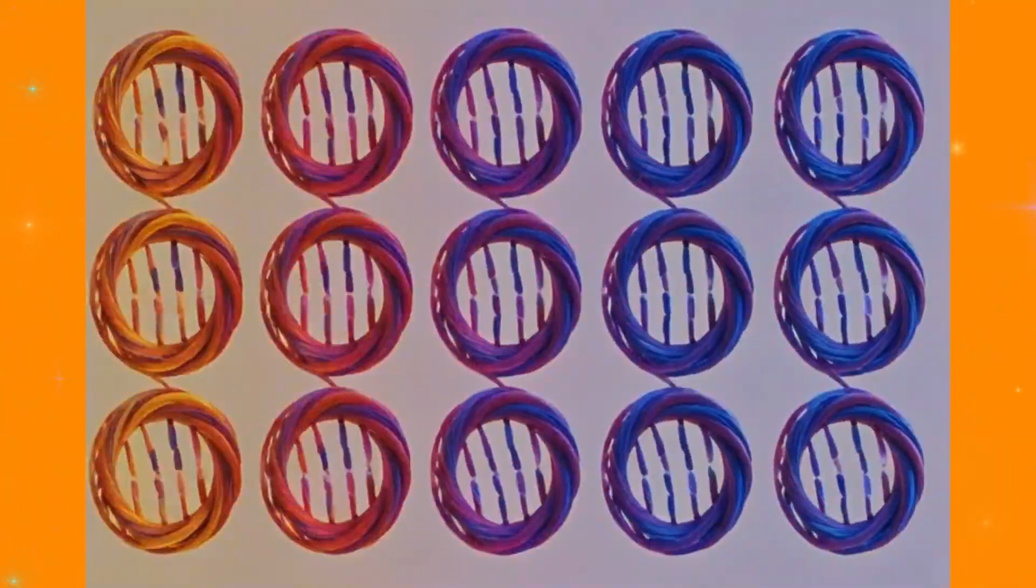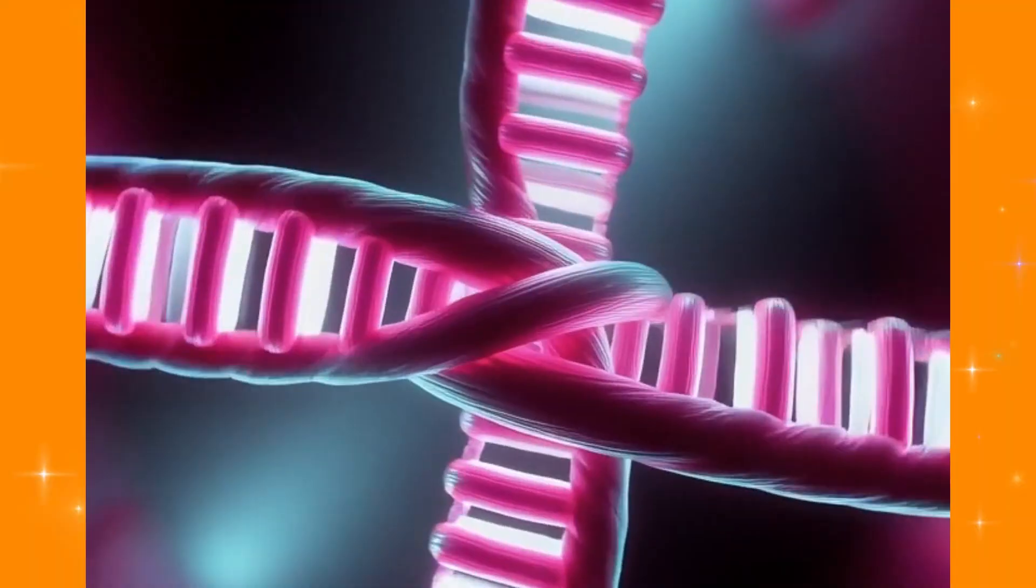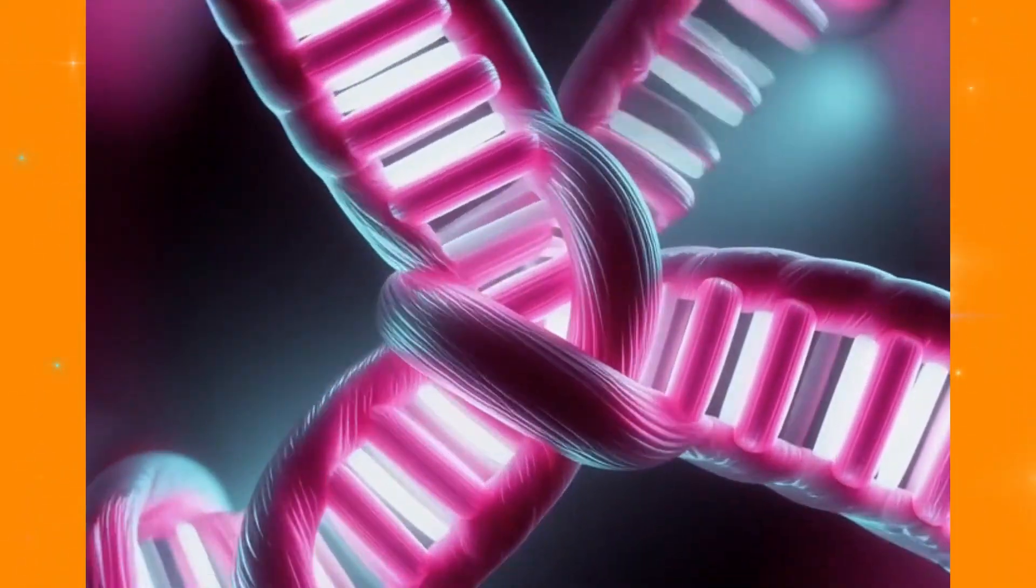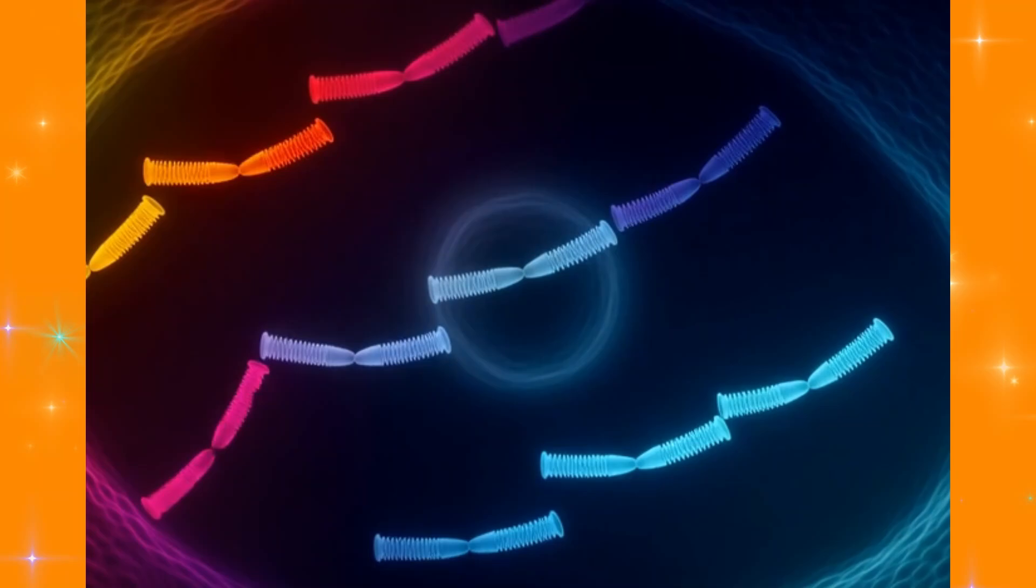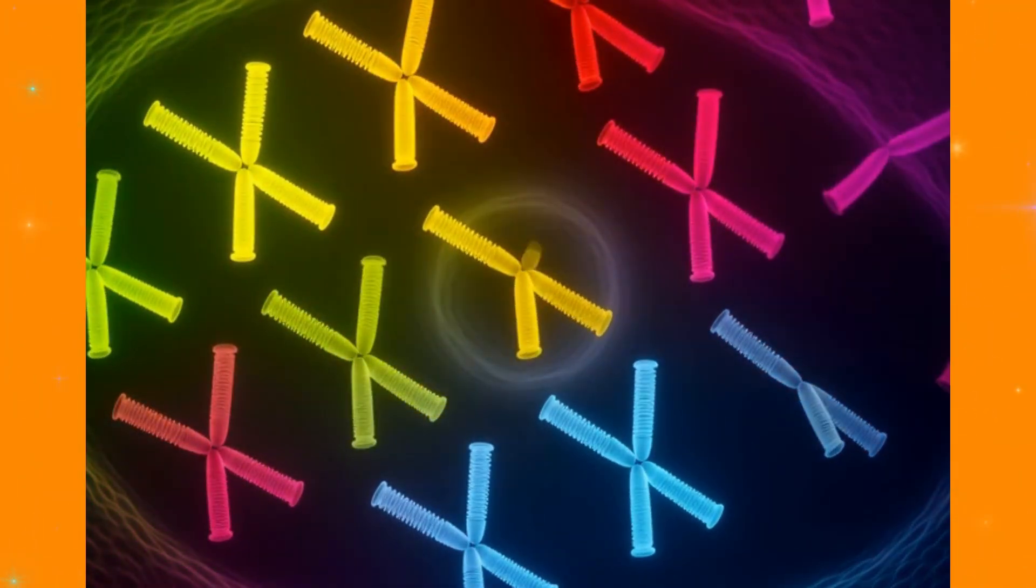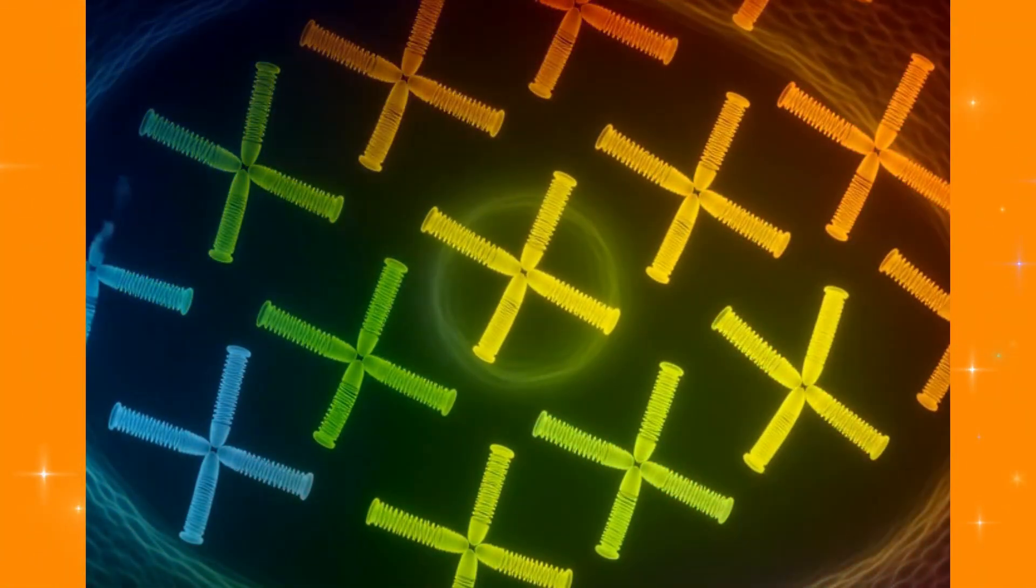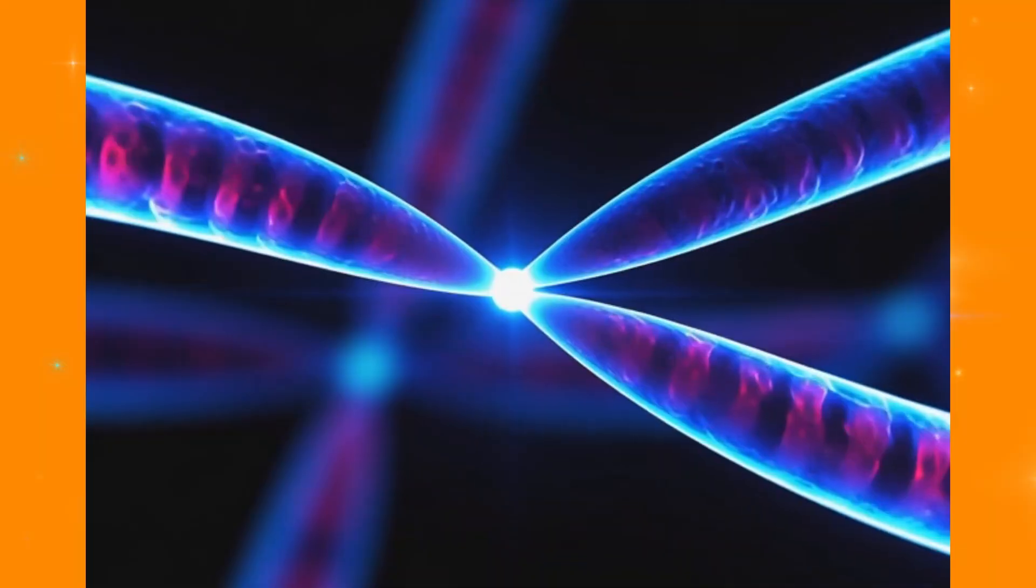Then comes the spectacular part. All that copied DNA, which normally looks like tangled spaghetti, suddenly organizes itself into perfectly neat X-shaped chromosomes. These line up single file down the center of the cell, like they're preparing for the performance of their lives.